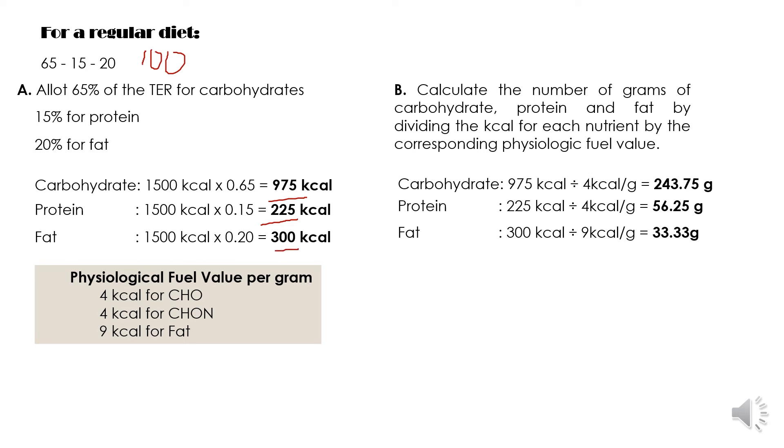For the fat 300 kilocalories divided by 9 kilocalories equals 33.75 grams. And then we will round off the total calories to the nearest 50 and the carbohydrates, protein and fats we will round off to the nearest 5 grams.